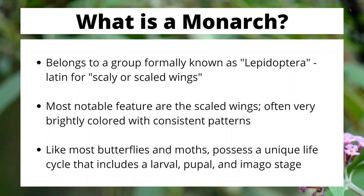The most notable feature obviously are these wings because they have really bright color patterns on them, or in the case of their family members the moths, their wings are dingy and brown, but no matter what they have some amount of scales that cover them. These insects are also defined by having a really interesting life cycle in that they start as an egg, hatch into a larva or caterpillar, eventually turning into a pupa or chrysalis, and then become an adult by entering an imago stage — and we're going to go over that in a little while.